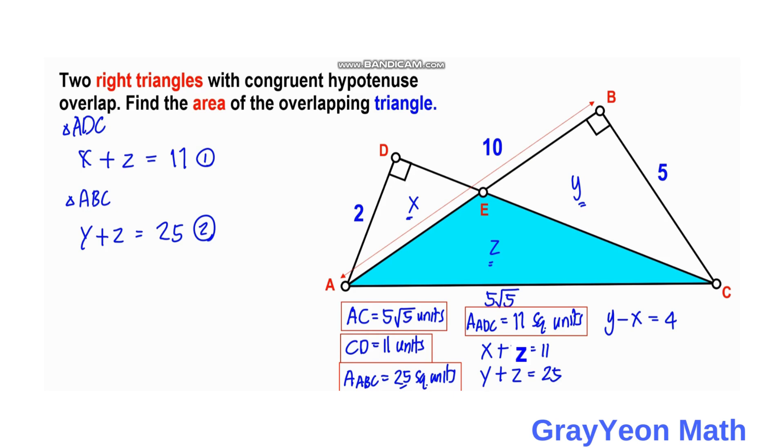Next we subtract equation 1 from equation 2. We can write Y plus Z equals 25 and subtract equation 1, X plus Z equals 11. If we subtract, we have Y minus X, and the Z cancels out, giving us Y minus X equals 14.